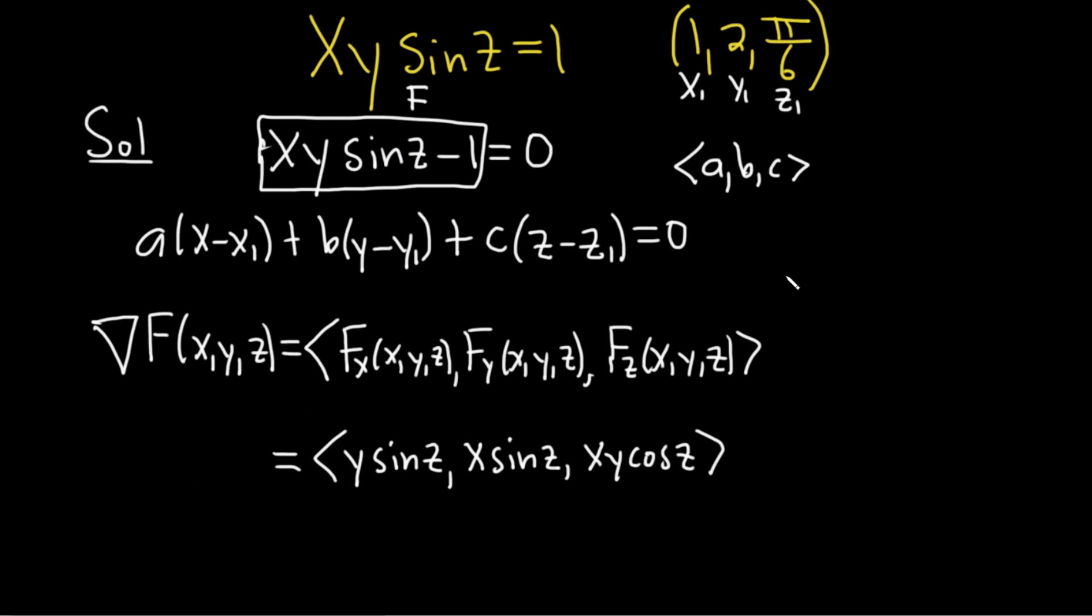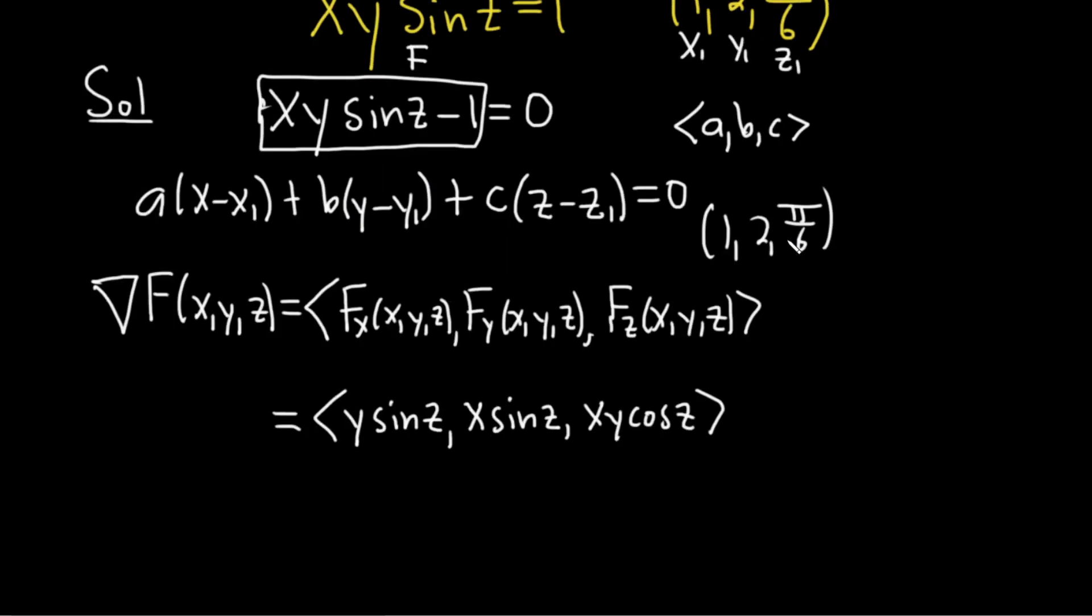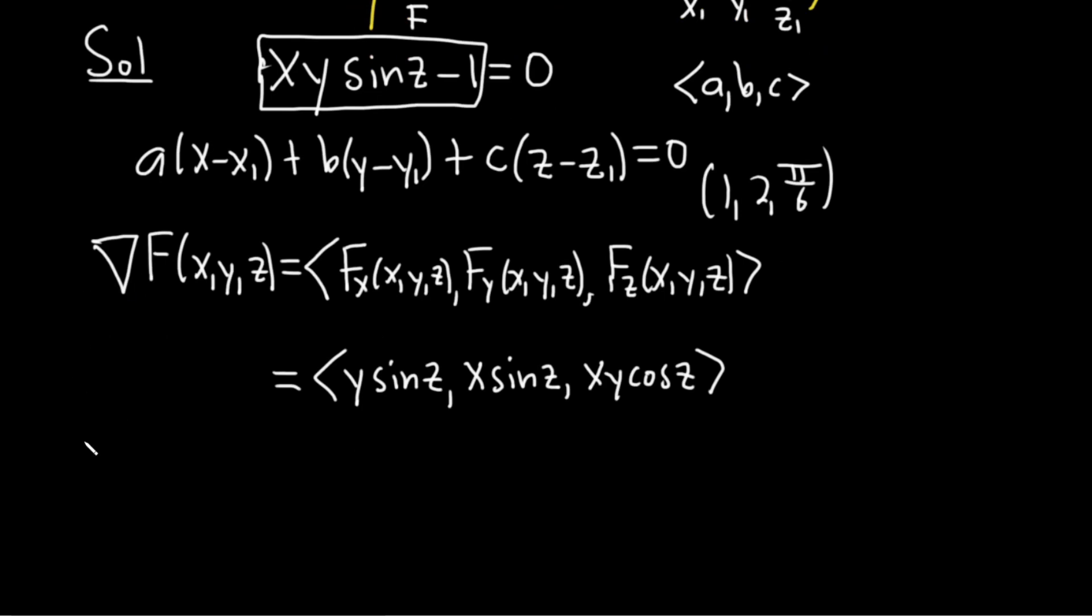So the only thing left to do is plug in our point, which I'm running out of room here, so it's 1, 2, pi over 6. Let's plug that in to our gradient vector and see what we get. The gradient at 1, 2, pi over 6.